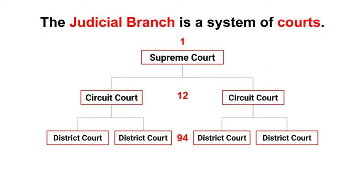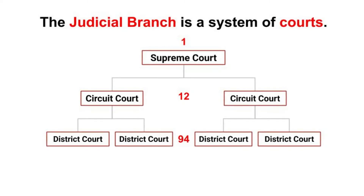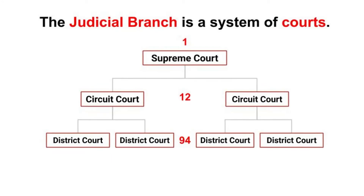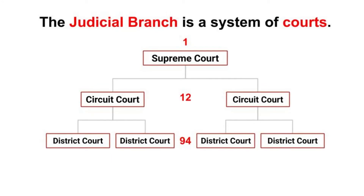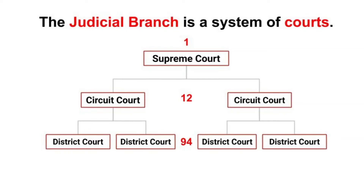The Judicial Branch is a system of courts: one Supreme Court, twelve Circuit Courts, and ninety-four District Courts.